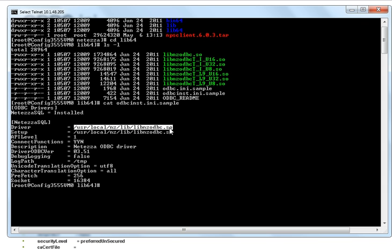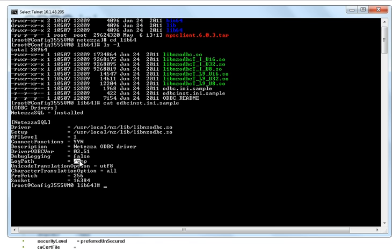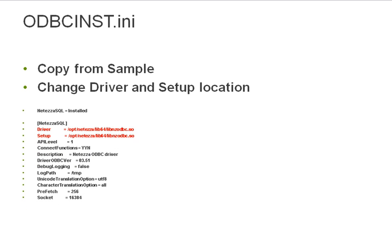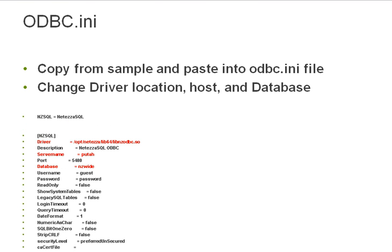Then you'll need to be sure to make changes to these lines here. The debug logging can be set to true if you run into problems, so that way Netezza will output a better log to the log path here. I basically copied this exactly and pasted it into the ODBC.INI which PowerCenter uses, and I just changed the driver location, server name, and database. For ODBC INST, I just changed the driver and setup — these are the same files as used here.